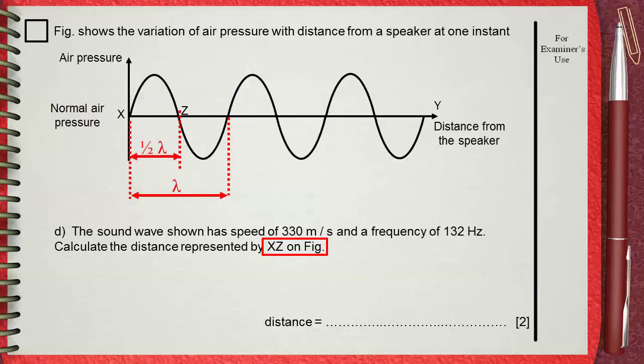So let's calculate the wavelength first. The general wave equation, which is V equals Lambda F, means that Lambda equals V over F. V, which is the speed of sound, 330 meters per second, divided by frequency, which is 132 hertz. Dividing these numbers, we get the wavelength equals 2.5 centimeters.